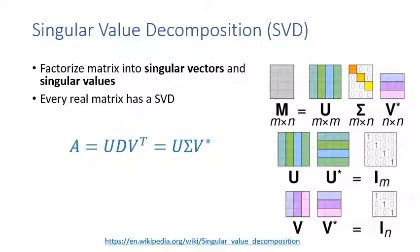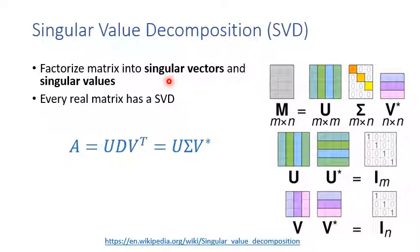Eigen decomposition has one problem: it can only be applied to square matrices, but most matrices are not square. So we need a more general decomposition method — that is Singular Value Decomposition (SVD). SVD can factorize a non-square matrix into singular vectors and singular values, analogous to eigenvectors and eigenvalues in eigen decomposition.